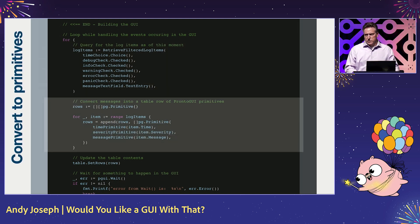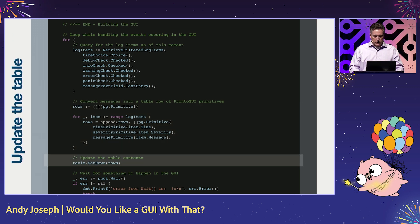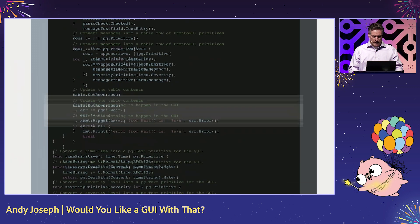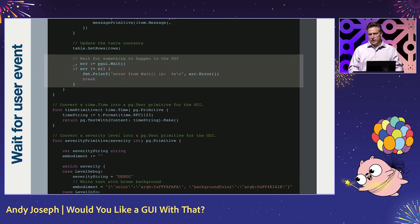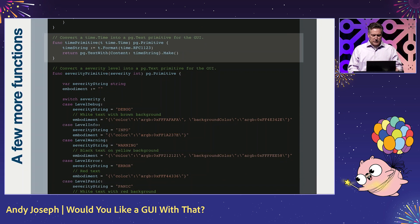We take those log items and convert them into primitives that can be shown as rows in the table. We set the rows of the table, then wait for events to happen. And there are just a couple of functions we use to convert log item information into primitives to be shown as cells within the table.